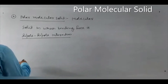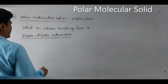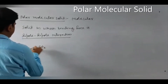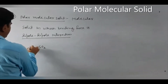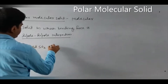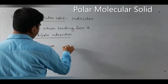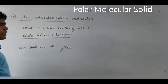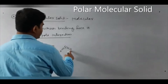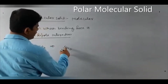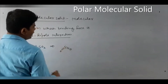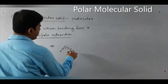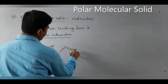For example, take solid SO₂. In solid SO₂, the molecule contains sulfur and oxygen. Oxygen has greater electronegativity than sulfur, meaning sulfur's electronegativity is less than oxygen's. Because of oxygen's higher electronegativity, the electrons are pulled toward oxygen.